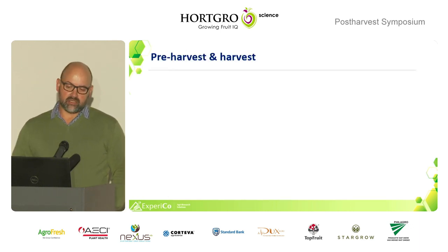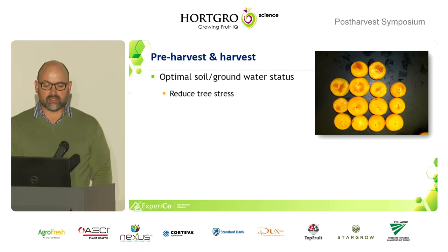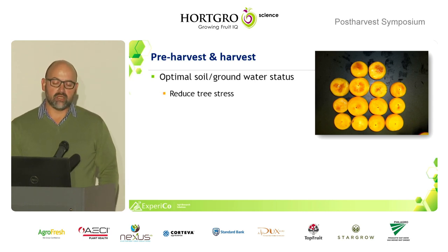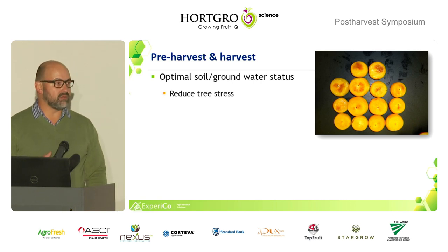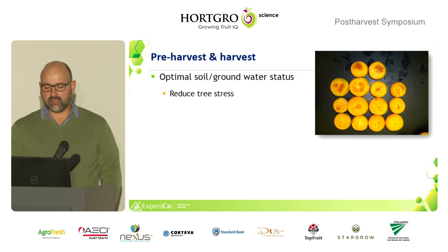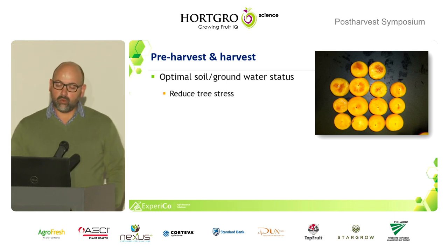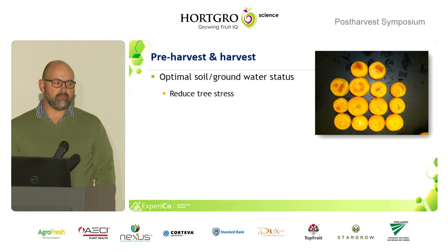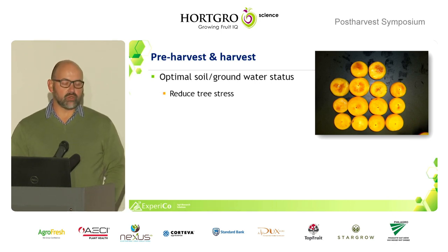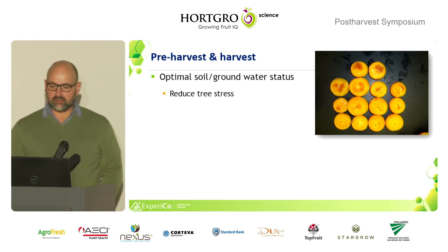Now we're going to look at the pre-harvest and harvest areas. Pre-harvest, you want to have optimal soil and groundwater status in your orchards to reduce stress on your trees — both drought stress and overwatering stress are not ideal. In that photo you can clearly see fruit that was stressed in the orchard due to water stress; the tree absorbed water out of the fruit. You don't see it at harvest, but after cold storage you'll have sunken shoulders and internal browning.